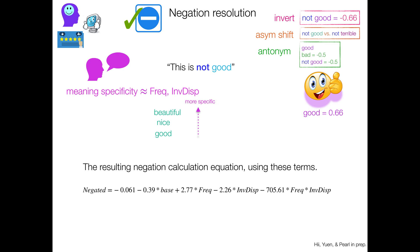And the resulting negation calculation equation, the regression equation, is this using these terms. So the negated score, that is, if you want to get not good, that's going to depend on a constant. And it's going to depend on the base score a little bit. So negative 0.39. So 0.39 on the base score. It's going to depend more on the relative frequency of good and the inverse dispersion of good individually. Now we're in the 2s instead of 0.39.